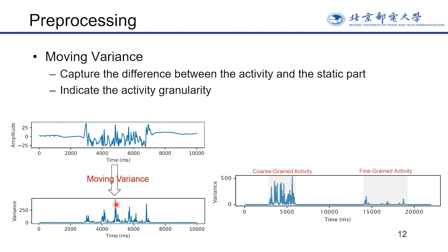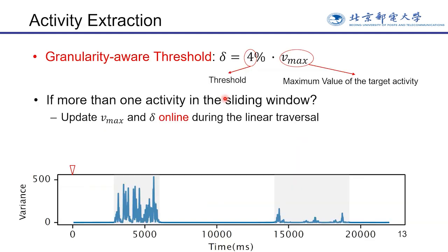The moving variance of the activity is much larger than that of the static period. In addition, we find coarse-grained activity will have larger moving variance, which indicates that we can use moving variance as an indicator of activity granularity. Based on extensive experimental studies, we found that setting the threshold to 4% of the maximum value of the target activity variance can accurately segment it.